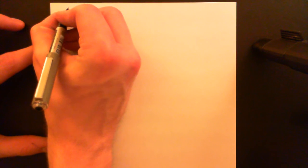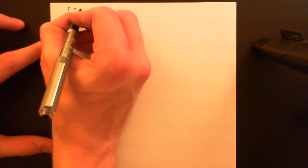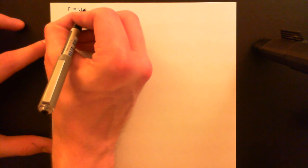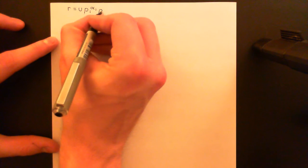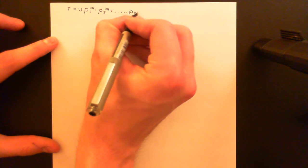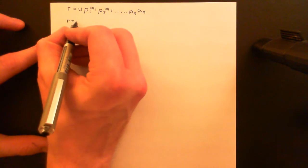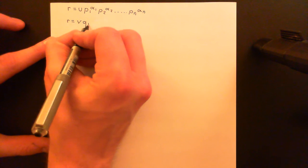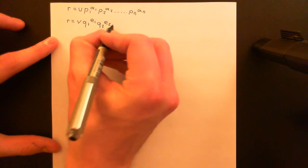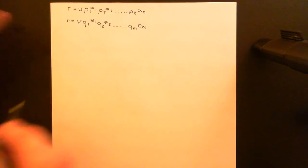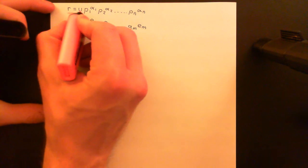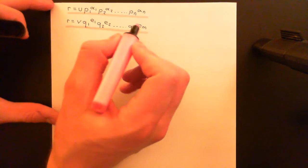Let's take our element r and factorize it into irreducibles. Let's suppose that we end up with two different ways to do this. The first factorization is u times p1 to the power of α1 times p2 to the power of α2, all the way along to pn to the power of αn. And now let's suppose we have another factorization: v times q1 to the power of e1 times q2 to the power of e2, all the way along to qm to the power of em. What I now want to prove is that they are equivalent to one another — that I can take the first and turn it into the second by fiddling around with which associates of these irreducible elements I'm using.